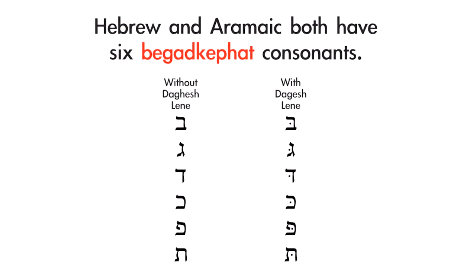Listen to the difference: V without the Dageshlene and B with the Dageshlene — the difference between something like vest with a V sound and boy with the B sound. You must be able to distinguish between these two pronunciation systems — those forms with the Dageshlene and those without. Knowing how to do this will help you accurately pronounce Aramaic words, which aids both your reading fluency and your memorization of scripture.